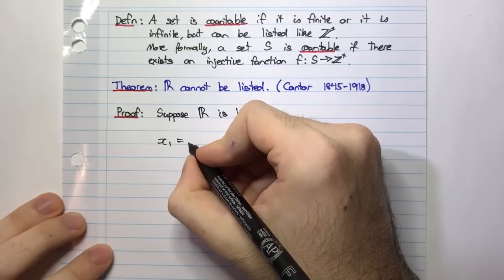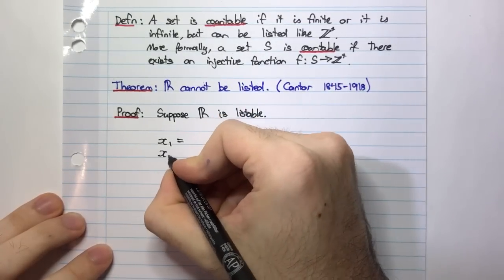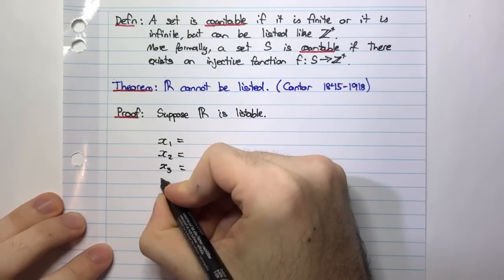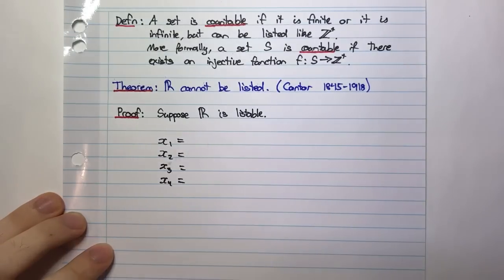So X1 is some real number, X2 is some real number, X3 is some real number, and so on.